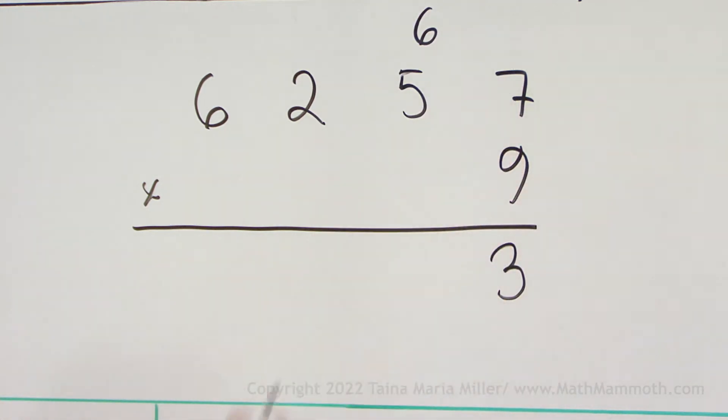And then 9 times 5, 45. I have to add this, 45 plus 6 is 51. So I get 51 tens. 1 goes here. The 5 is regrouped into the hundreds.